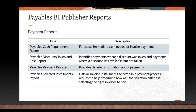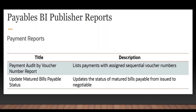There are also Payable Payment Registers, which provide detailed information about payments. Another is the Payable Selected Installment Report, which lists all invoice installments selected in a Payment Process Request to help you determine how well the selection criteria is selecting the right invoices to pay. We also have the Payment Audit by Voucher Number Report, which lists payments with assigned sequential voucher numbers.